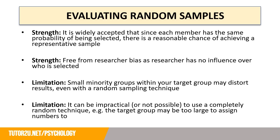However, there are also some limitations. Small minority groups within your target group might distort results — even with a random sampling technique we might still pull out these small minority groups. Also, it can be quite impractical or not possible to use a completely random technique; for example, the target group might be too large to assign numbers to.